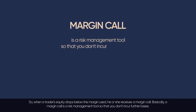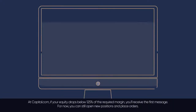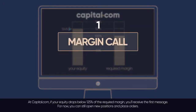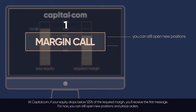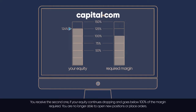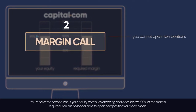Basically, a margin call is a risk management tool so that you don't incur further losses. At Capital.com, if your equity drops below 125% of the required margin, you'll receive the first message. For now, you can still open new positions and place orders. You receive the second one if your equity continues dropping and goes below 100% of the margin required — you are no longer able to open new positions or place orders.